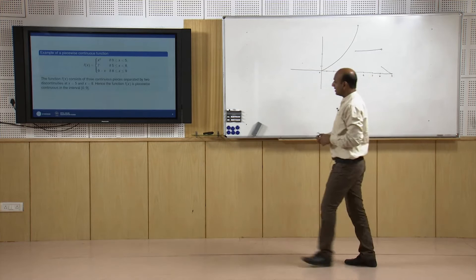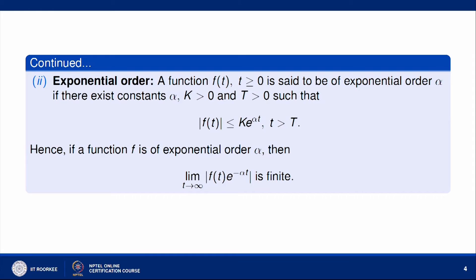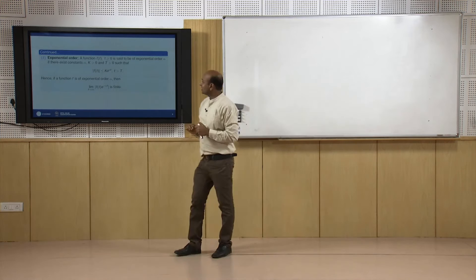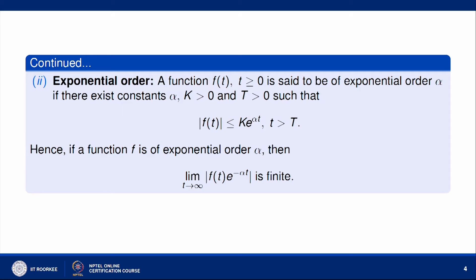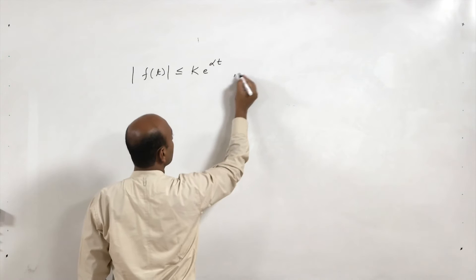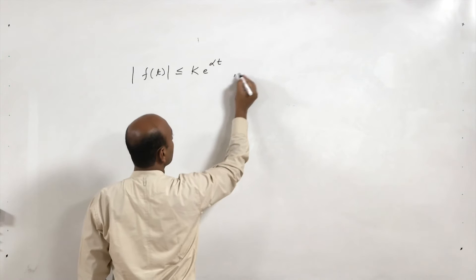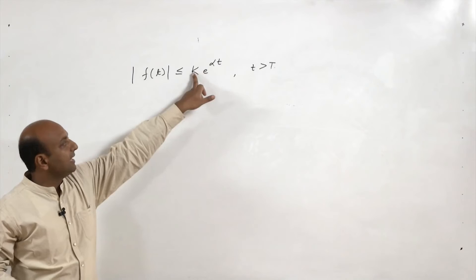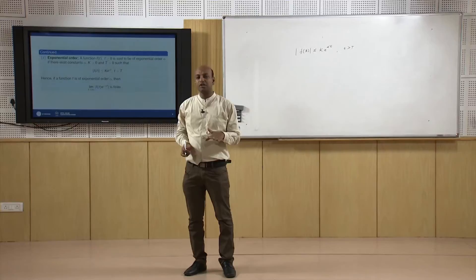The next definition is exponential order. A function f(t), t ≥ 0, is said to be of exponential order α if there exist constants α, k, and T > 0 such that |f(t)| ≤ k·e^(αt) for all t > T. If this condition holds for some α and k, then we say the function is of exponential order α.